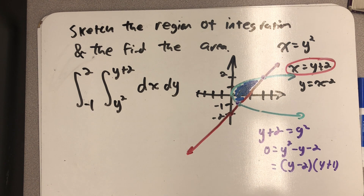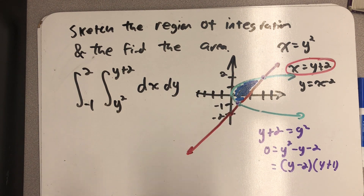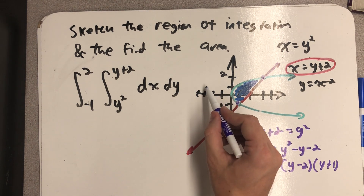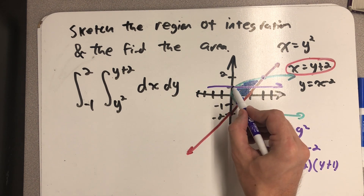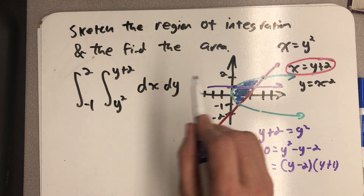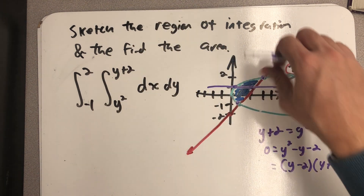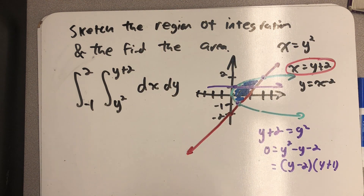I see no reason to find the area in any way other than exactly what's set up here — I don't see any benefit to switching the order of integration. So we'll integrate with respect to x first. I can see that everything is set up correctly: I go into the region through y squared and out of the region through y plus 2.